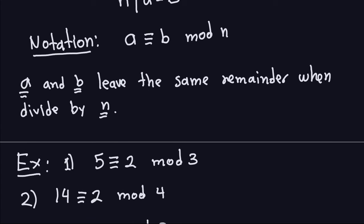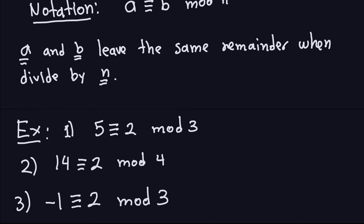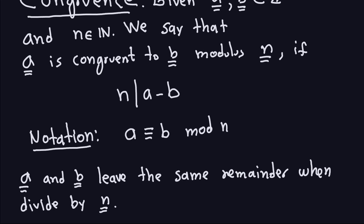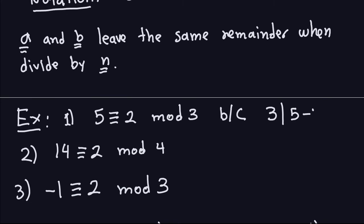Let's look at examples. The statement says 5 is congruent to 2 modulus 3. To check this, 3 should divide 5 minus 2. Indeed, 5 minus 2 is 3, and 3 divides 3, so this is correct. Both numbers leave remainder 2 when divided by 3. The next statement says 14 is congruent to 2 modulo 4. For this to be true, 4 should divide 14 minus 2, which is 12. And 4 divides 12, so this is also true.